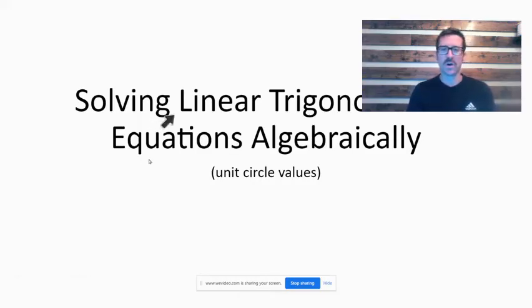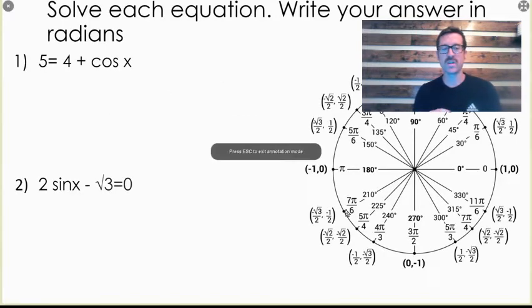All right, in this video, we are going to solve linear trigonometric equations algebraically. So as we look right here, our first equation that we're going to solve is 5 equals 4 plus cosine x.